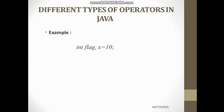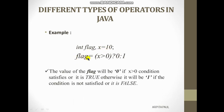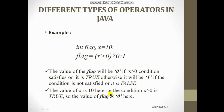Here I have declared two integer variables: flag and x, with x assigned the value 10. I have written: flag = x > 0 ? 0 : 1. That means if x is greater than 0, flag will be 0; if x is less than 0, flag will be 1. Since x is 10, the condition x > 0 is true, so the value of flag will be 0. This is how the conditional operator works — it is called ternary because it accesses three operands: the condition part, the true statement part, and the false statement part.